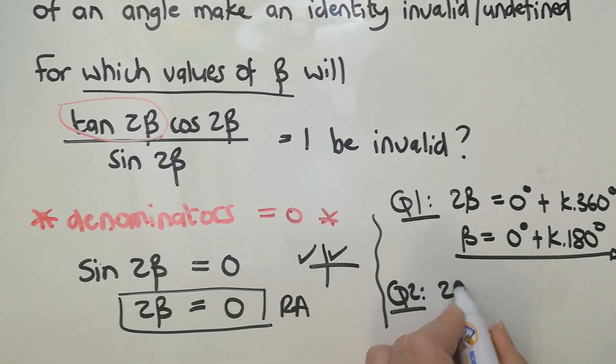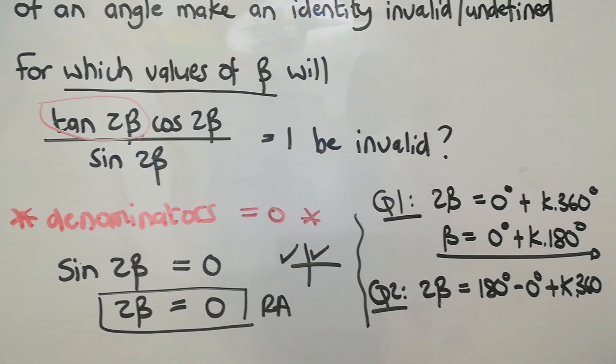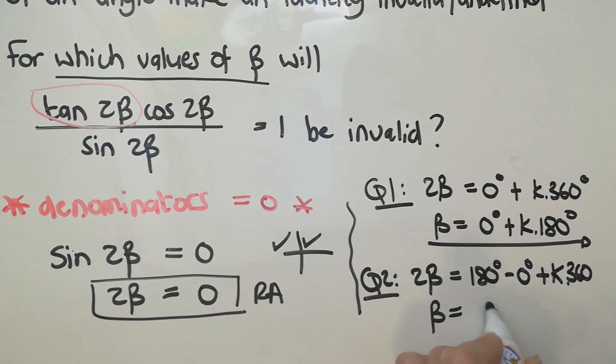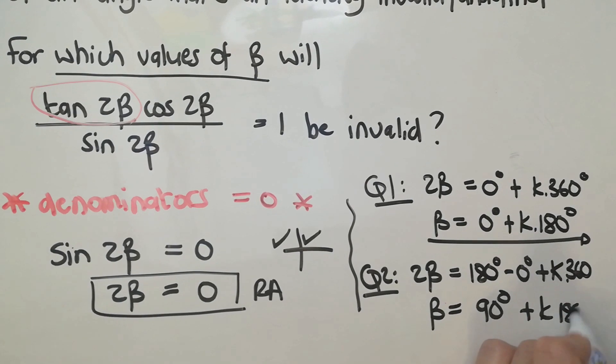And then in quad 2, I'm going to say 2β equals 180 minus 0 plus k360, and then that means I'm going to divide through by 2 so I'm going to have β equals 90 degrees plus k180.